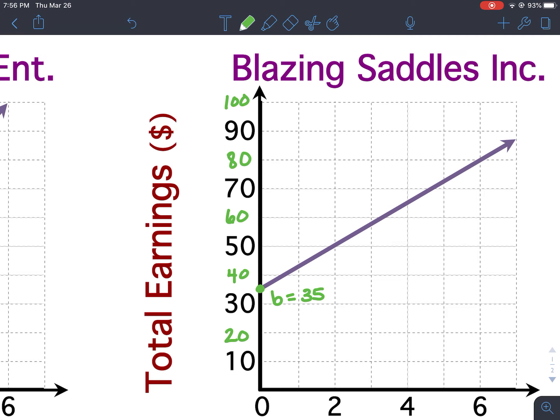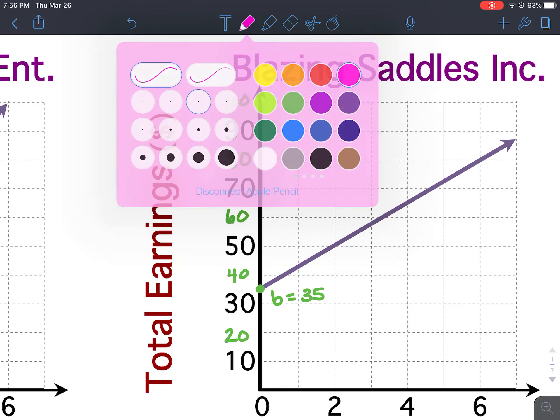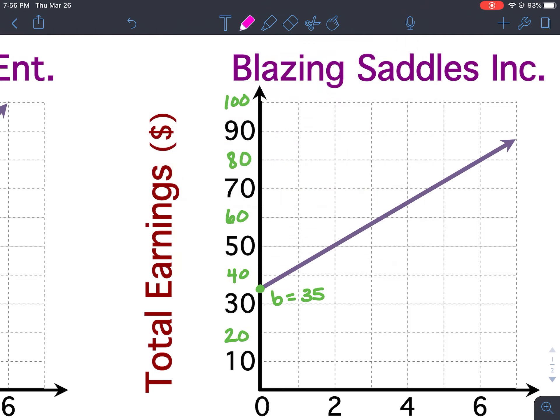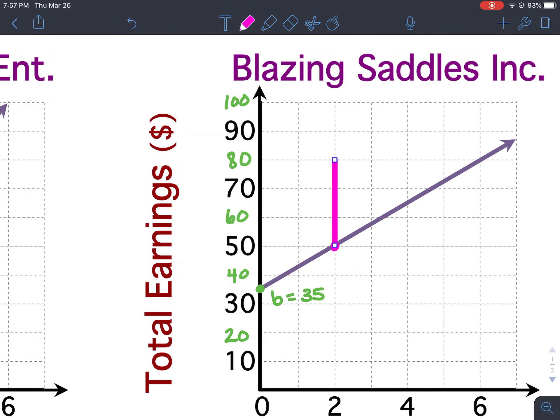So now we need to find the rate of change, and remember, the rate of change is your slope, and your slope is your rise over run. So we need to pick two points on the graph, and we find our rise and our run. So I'm going to pick this point here. Now remember, rise, then run. It's rise over run. So you want to do your rise first, and then the run.